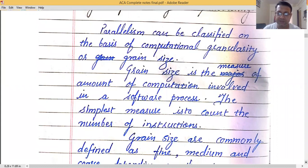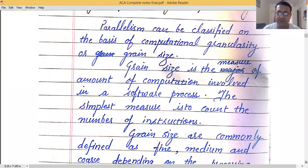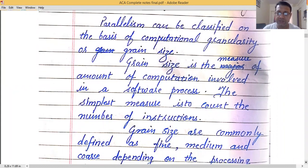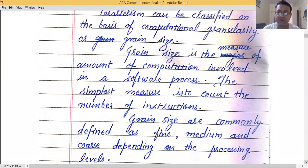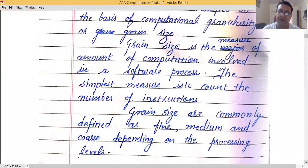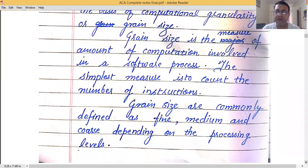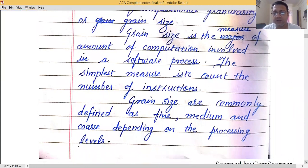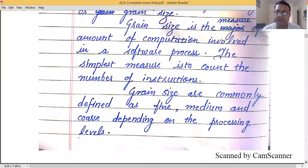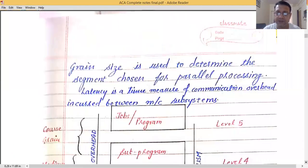We will now look at how many types of grain size there are. Grain size is defined in three parts: fine, medium, and coarse. Grain size is used to determine what segment you are choosing for parallel processing.